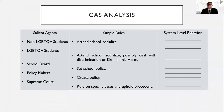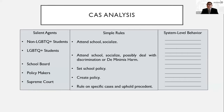Breaking the system into a CAS analysis — salient agents, simple rules, and emergent behavior — Uriah clarifies these are not all salient agents but are chosen for comprehensibility. The emergent behaviors are more complex than simple rules. For example, non-LGBTQ students follow simple rules like attending school and socializing, but their emergent behavior can vary — they may act as allies or accidentally perpetuate bias and microaggressions.